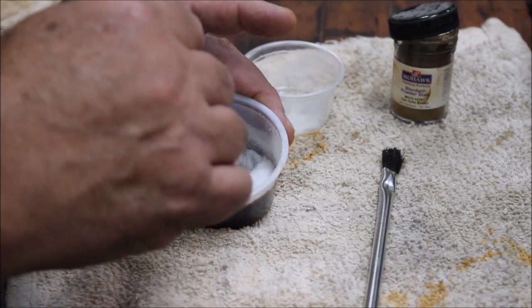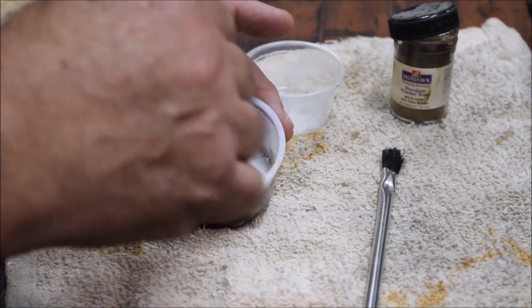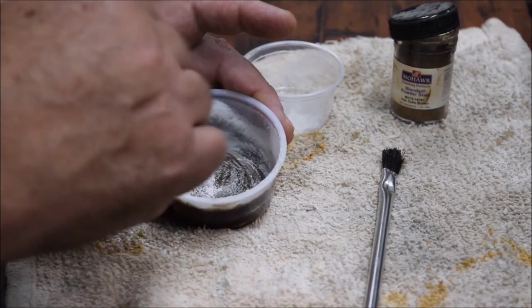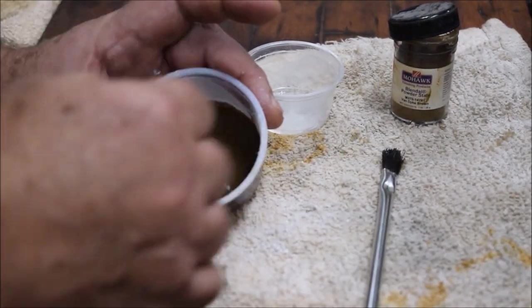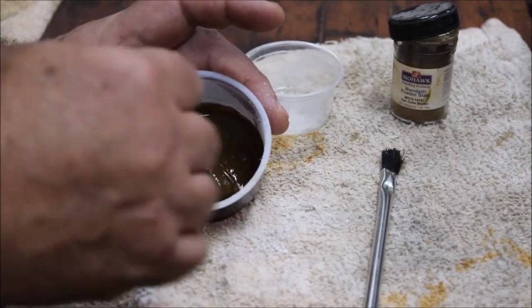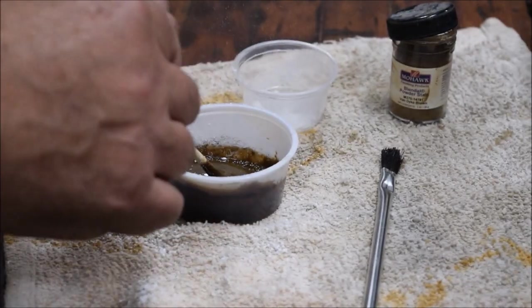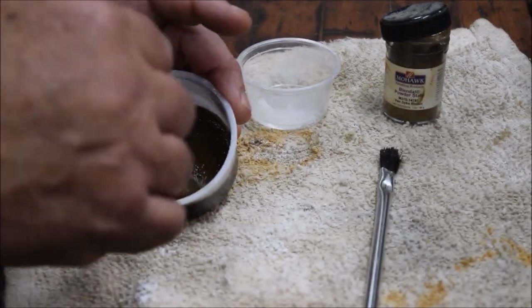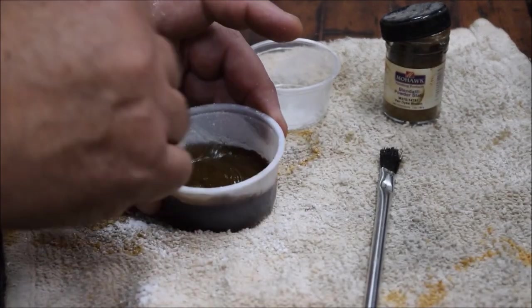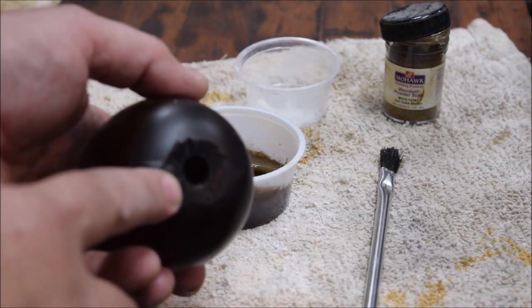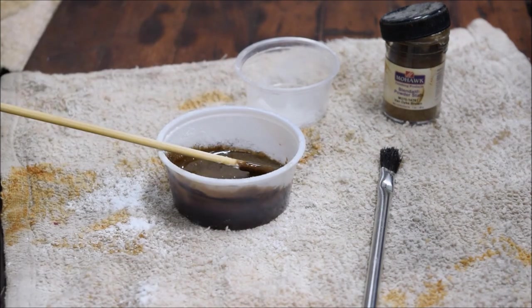And whatever squeezes out will fill any spaces that may exist between the bottom of the cannonball and that turning where we cut it. Okay. And you can see how this is starting to thicken up. You can really dump a lot of this stuff in there and really make it almost like a putty if that's what your job requires. But I think that's going to work for us. And here's our ball. I hit it with a little bit of Van Dyke Brown dye just to color it in a little bit.